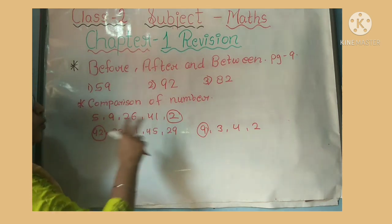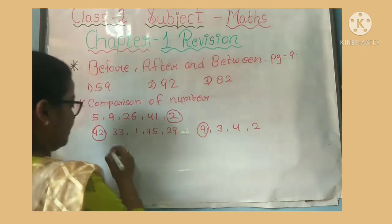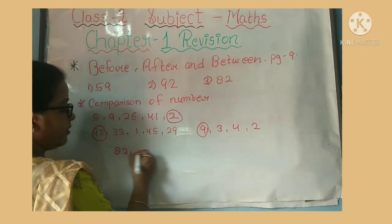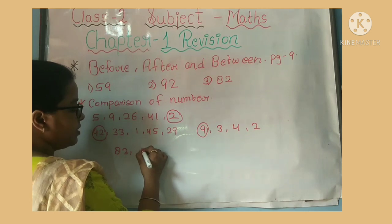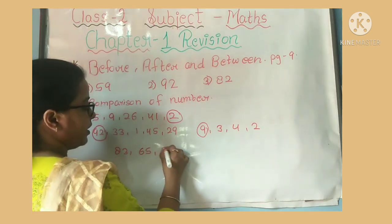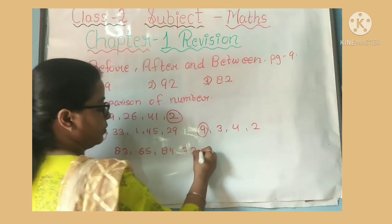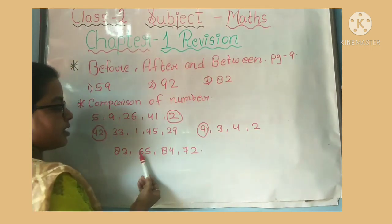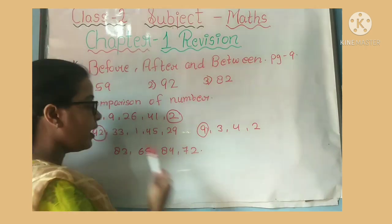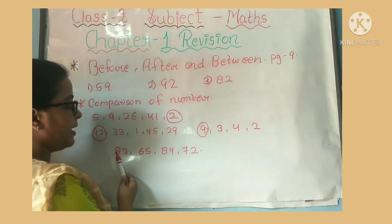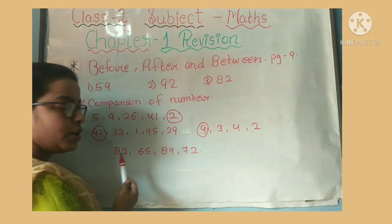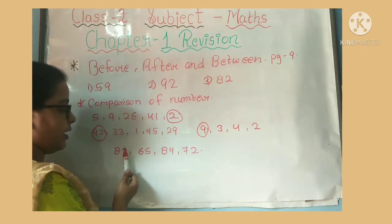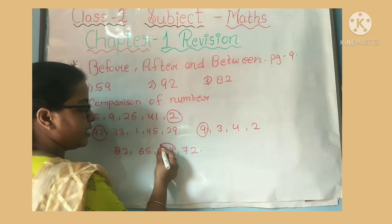Suppose two numbers' first digits match. Let's see: 83, 65, 84, 72. Now look: 83, 65, 84, 72 — the first digits are 8, 6, 8, 7. Since two numbers share first digit 8, we compare the second digits: 3 and 4. So the biggest number is 84.